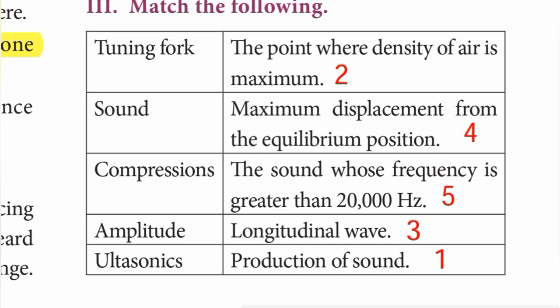Roman numeral III — Match the following. 1. Tuning fork — production of sound. 2. Sound — the point where density of air is maximum. 3. Compressions — longitudinal wave. 4. Amplitude — maximum displacement from the equilibrium position. 5. Ultrasonics — the sound whose frequency is greater than 20,000 hertz.